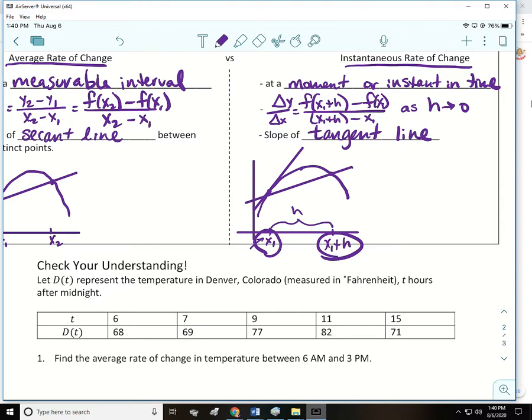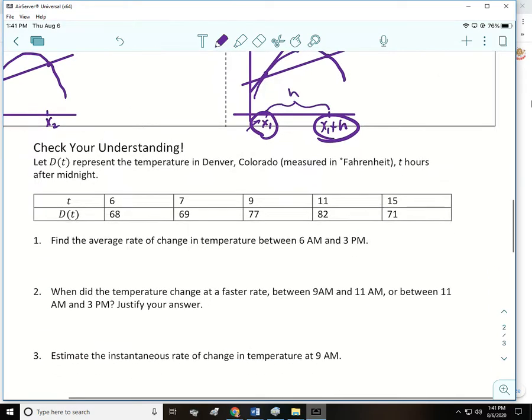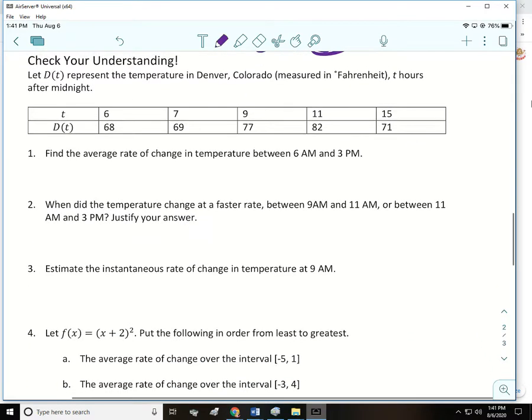So it's going to be f of x sub 1 plus h minus f of x1 over x sub 1 plus h minus x sub 1. And what we want is for that h value to get closer and closer to 0 until it's gone and then you have a tangent line. If you don't understand that right now it's okay, we're going to talk about that idea for a while. Let's get through some of these examples.